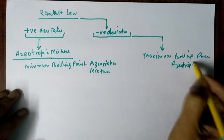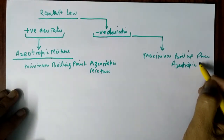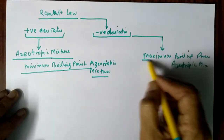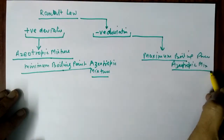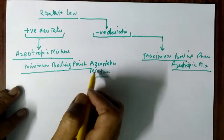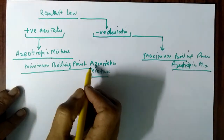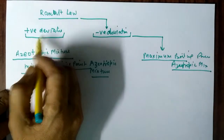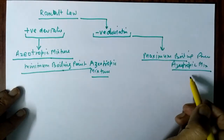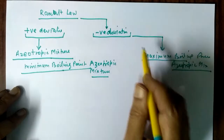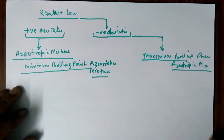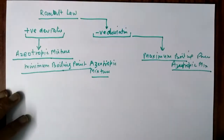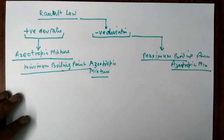So there are two types of azeotropic mixtures. One is the minimum boiling point azeotropic mixture and the other is the maximum boiling point azeotropic mixture. The minimum boiling point azeotropic mixture is due to positive deviation from Raoult's law, and the maximum boiling point azeotropic mixture is due to negative deviation from Raoult's law. Now we will study how these two mixtures are formed.